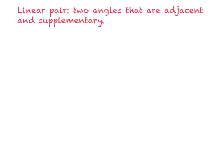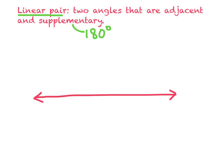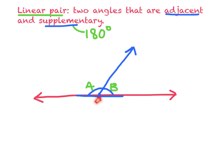The next type of angles we're going to work with are called linear pairs. These are two angles that are adjacent — they share a vertex and a side — and they're supplementary, which means they add up to 180 degrees. Since 180 degrees is a straight line, I would draw a straight line with two angles in it. I'll call it angle A and angle B. They make a straight line, and together their measures make 180 degrees, so they're supplementary. They're also adjacent because they share a vertex and a common side. So those are called a linear pair.